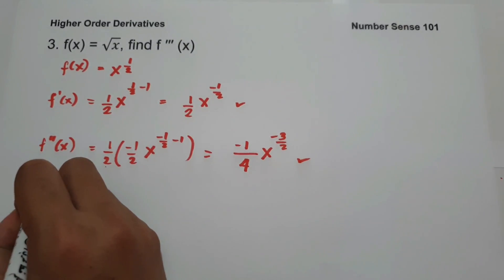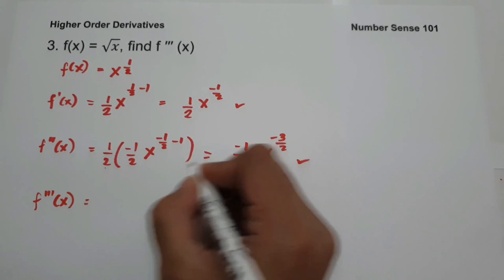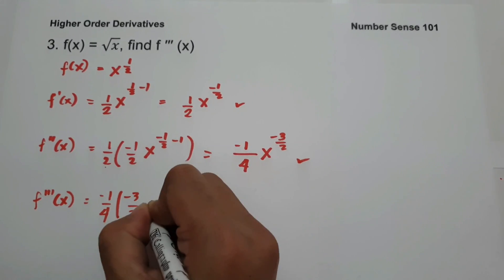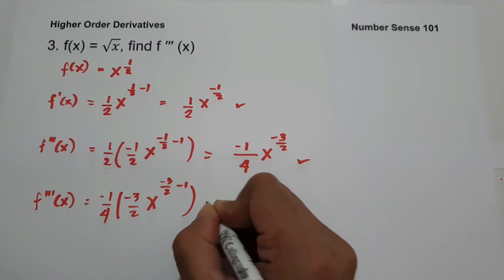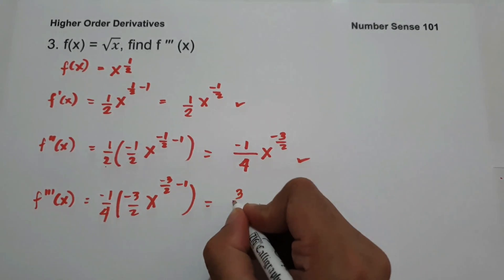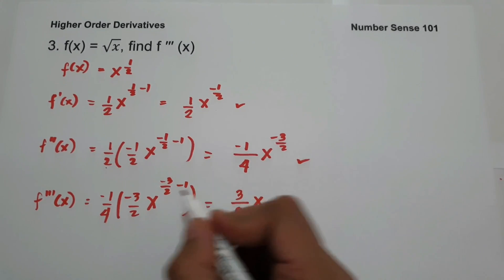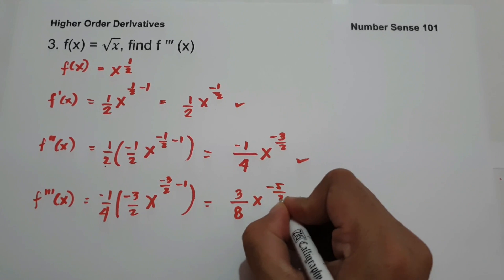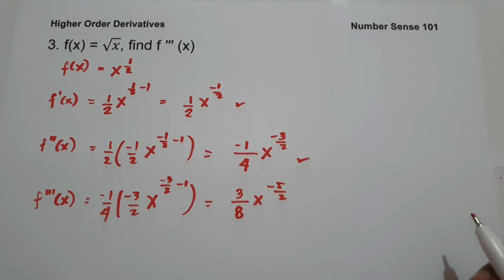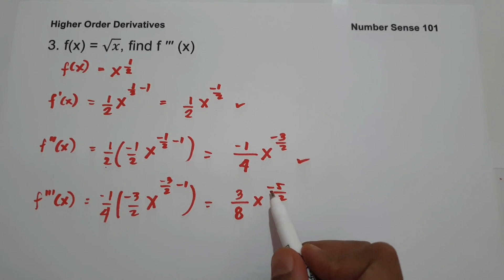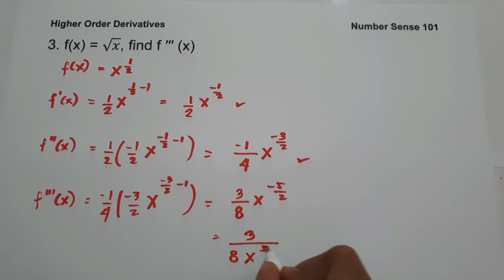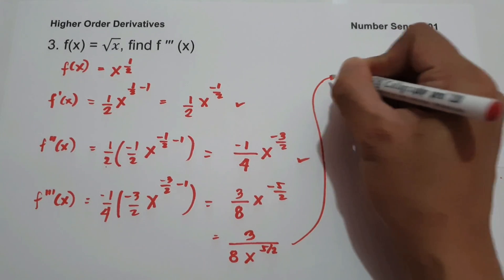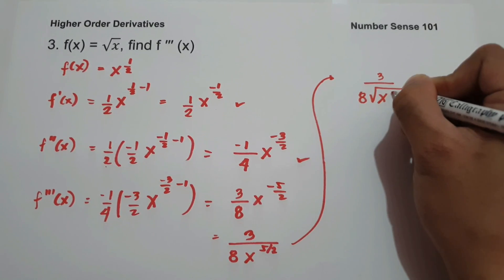To find the third derivative, we take the derivative of negative 1 fourth x raised to negative 3 over 2. Bringing down negative 3 over 2: negative 1 fourth times negative 3 over 2 times x raised to negative 3 over 2 minus 1, which is negative 5 over 2. To eliminate the negative exponent, we move x to the denominator, giving us 3 over 8 times x raised to positive 5 over 2. We then write this in radical form: 3 over 8 times the square root of x raised to 5.